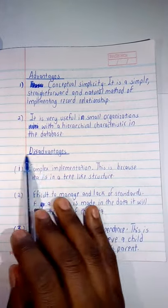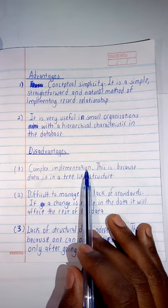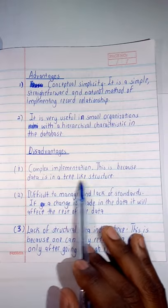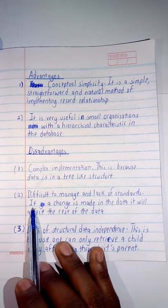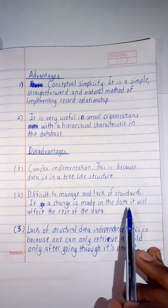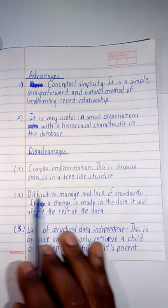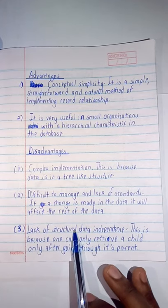Then the disadvantages: we are having complex implementation - this is because the data is in a tree-like structure. And then two, we are having difficult to manage and lack of standards. So if a change is made in the data, it will affect the rest of the data, so it means it is difficult to manage because of this. Then we're having a lack of structural data independency.